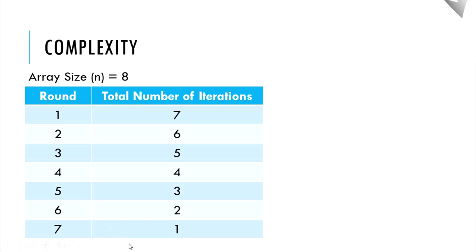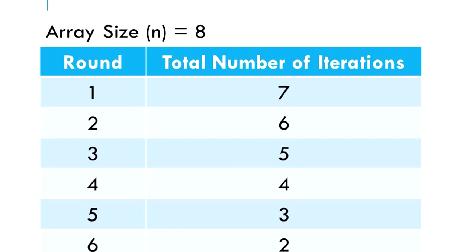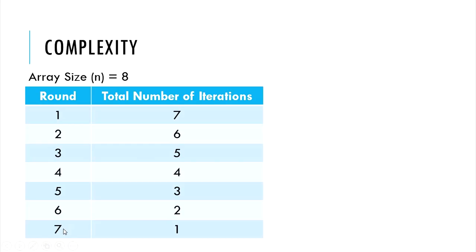Therefore, we can see that for each round, we iterated n-round times. For the first round, we iterated 7 times. For the second round, we iterated 6 times. Third round, we iterated 5 times. Fourth round, we iterated 4 times. Fifth round, 3 times. Sixth round, 2 times. And seventh round, we iterated 1 time.